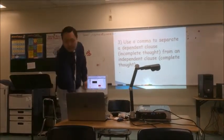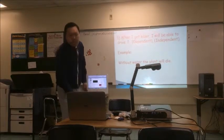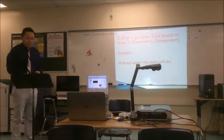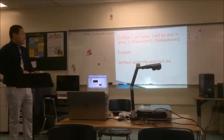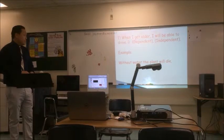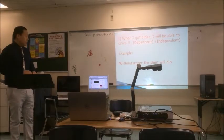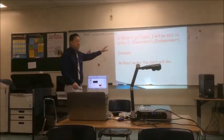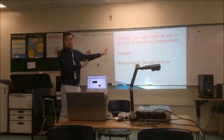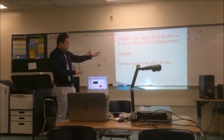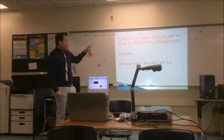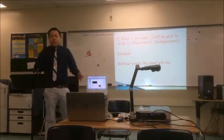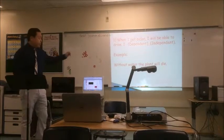So let's take an example: When I get older, I will be able to drive — dependent, independent. When I get older is a dependent sentence because it's not a sentence on its own. And 'I will be able to drive' — it's a sentence on its own. You don't need the other part there.